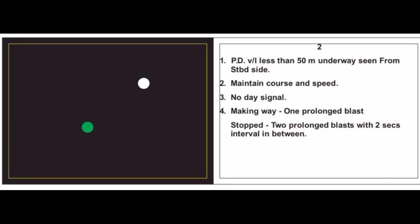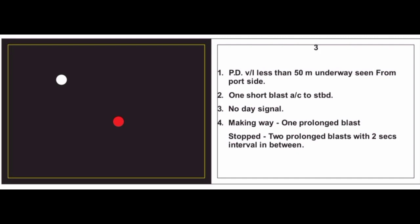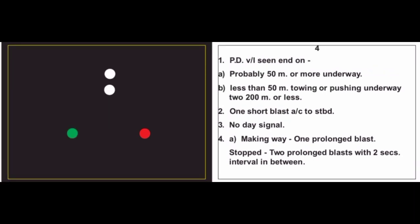Card 3 is exactly like card 2, but instead of a green light we are able to see the red light — red light means port side. So it is a power driven vessel less than 50 meters, underway, seen from port side. We give one short blast and alter course to starboard. There is no day signal for that vessel. Sound signal: making way — one prolonged blast; stopped — two prolonged blasts with two-second interval.